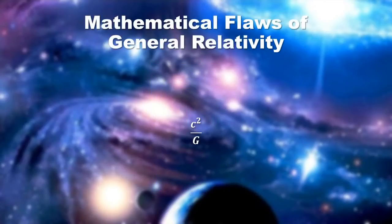The mathematical flaws of general relativity. Einstein's constant is responsible for inventing dark matter and dark energy.